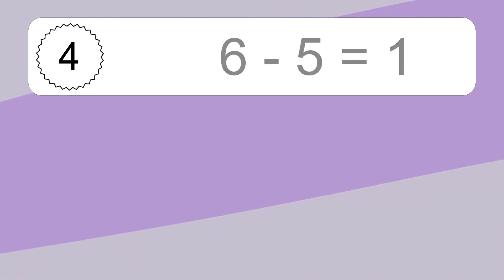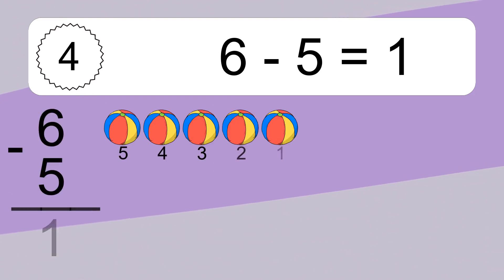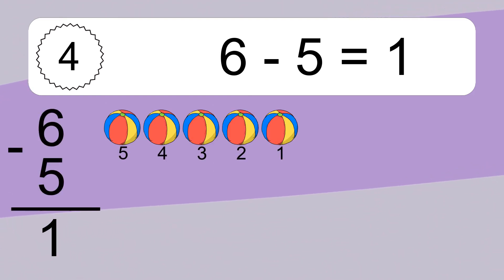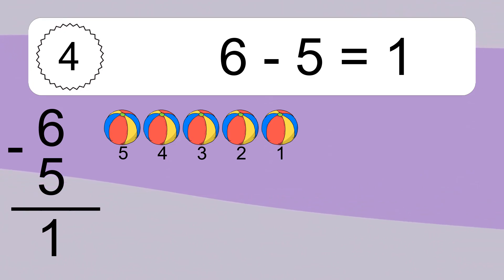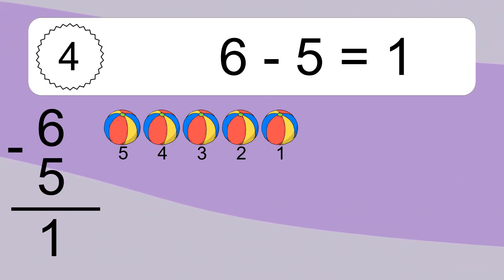16 minus 5 equals what? 16 minus 5 equals 1. Let's count it. 5, 4, 3, 2, 1.